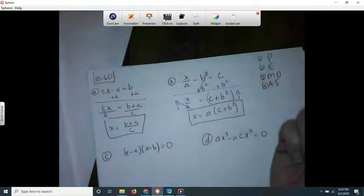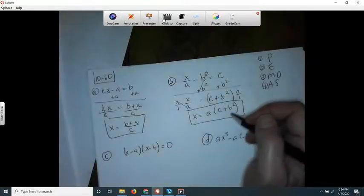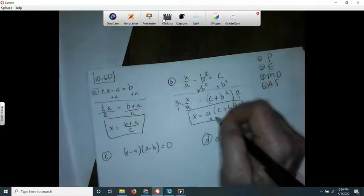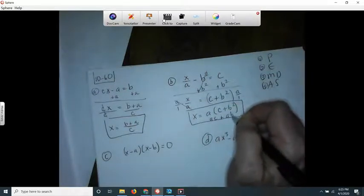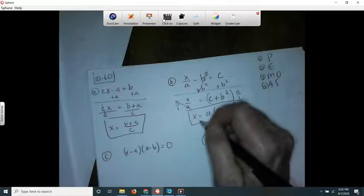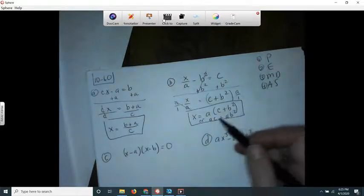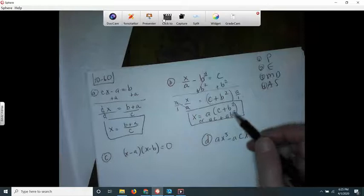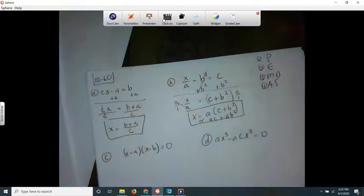I'm going to check that. Oh, another way to write that is ac plus ab squared. Your answer key has it both ways, or you can put the ab squared first and the ac second. It doesn't matter.